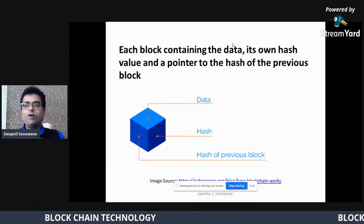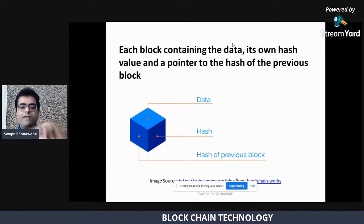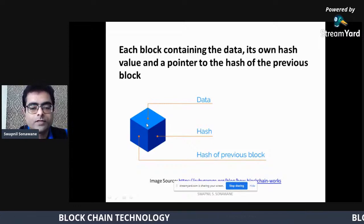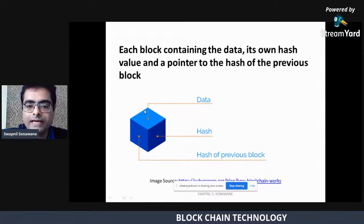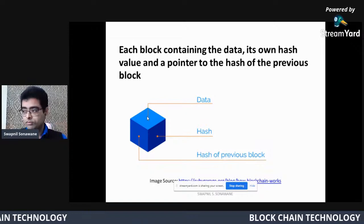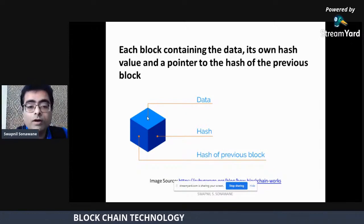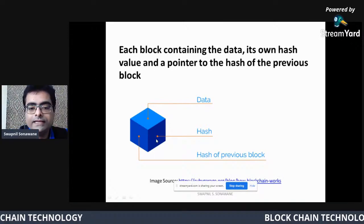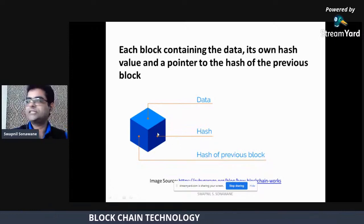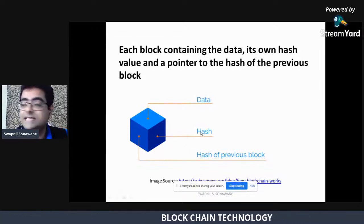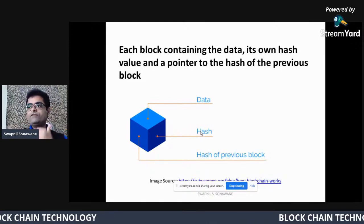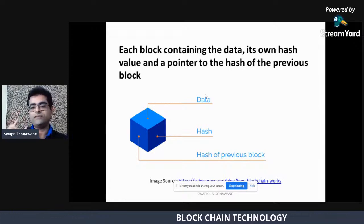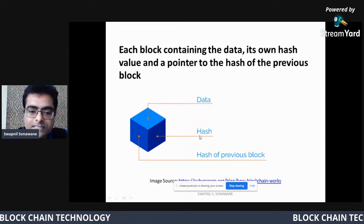Let's go into the technical details of a particular block. The basic building block of blockchain is a block, so what does a block contain? Every block contains mainly three things. The first is the data of the block — the block's data represents different transactions, and these transactions are present in the form of a Ledger. Every block also contains its hash value. Hash value can be obtained using a concept called hashing, which provides different algorithms that generate a unique hash value when applied to data.